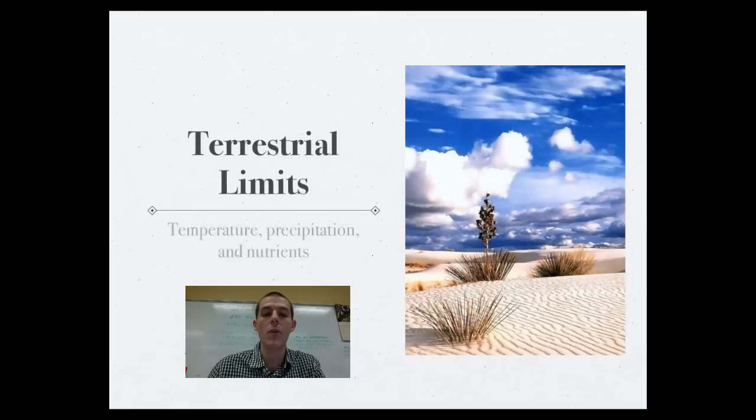As far as terrestrial biomes are considered, the major limits on plant growth is going to be temperature and precipitation. Areas that are warm and have a lot of sunlight and a lot of rain have the highest primary production. Areas that don't, don't. If you start at the equator and move north or south, there's a gradient in primary production from the rainforest to the temperate areas to the poles. Primary production goes down as you move towards those areas.